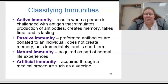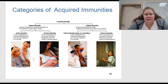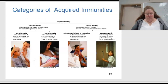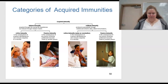Natural immunity is acquired as part of normal life experiences. Artificial immunity is acquired through medical procedures such as vaccinations.